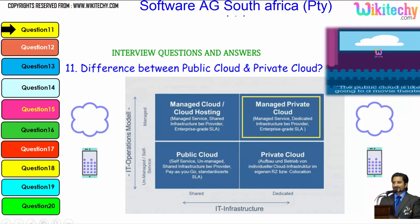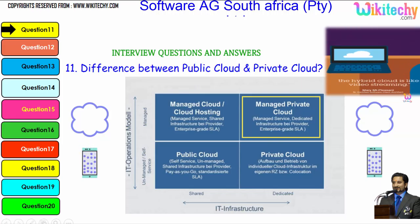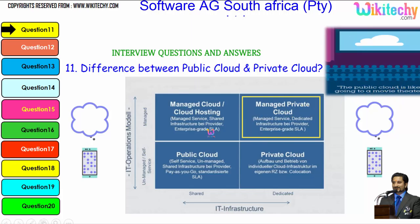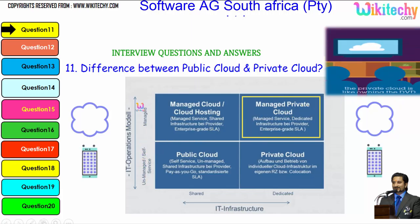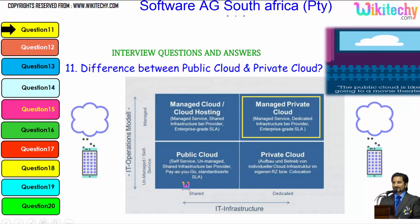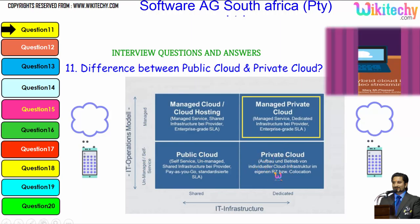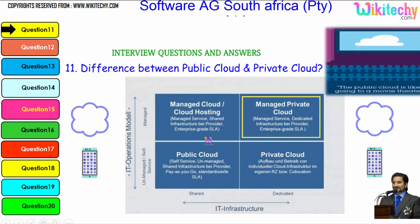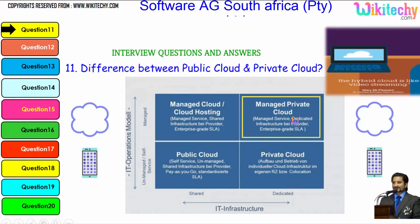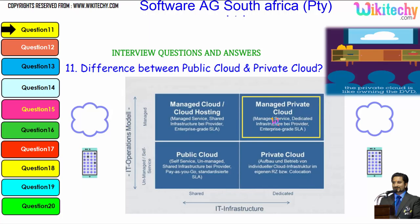Public cloud is like viewing a film in the theatre. Private cloud is viewing a film on DVD at home. And hybrid cloud is like video streaming. Looking at the IT operations model and IT infrastructure: public cloud gives shared unmanaged services; private cloud gives dedicated unmanaged services; shared managed cloud gives managed cloud hosting; and managed private cloud gives a managed dedicated service.